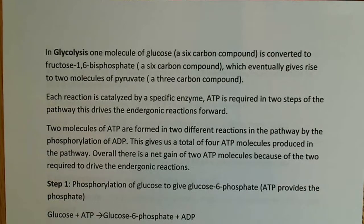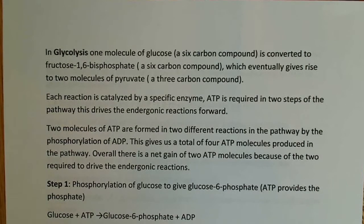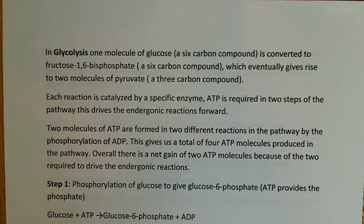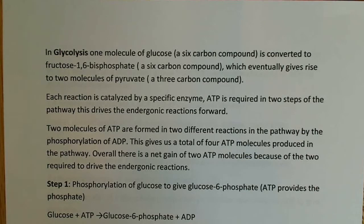This is a catabolic reaction. Each reaction is catalyzed by a specific enzyme — each one has its own enzyme. Each reaction is a ten-step process. ATP is required in two steps of the pathway and drives endergonic reactions forward. Essentially, where you see ATP used in the pathway is where unfavorable reactions are being made favorable by coupling them to ATP hydrolysis.